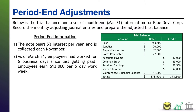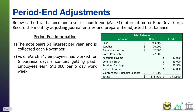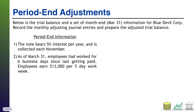Welcome back. I'm going to take these in order and I'm going to clear my trial balance out of the way to give me some room to work. First up, it says the note bears 5% interest per year and is collected each November. So first of all, we have to identify what note are they talking about. I'm going to go back to my trial balance and I'm going to see notes receivable, $72,000. So I'm going to write that $72,000 down at the bottom — that's my note receivable.